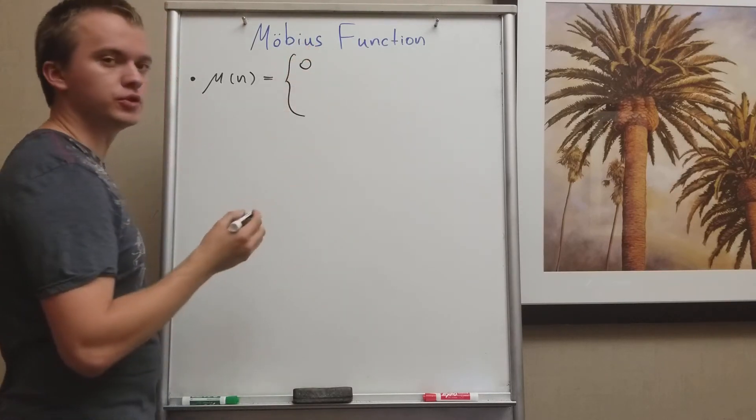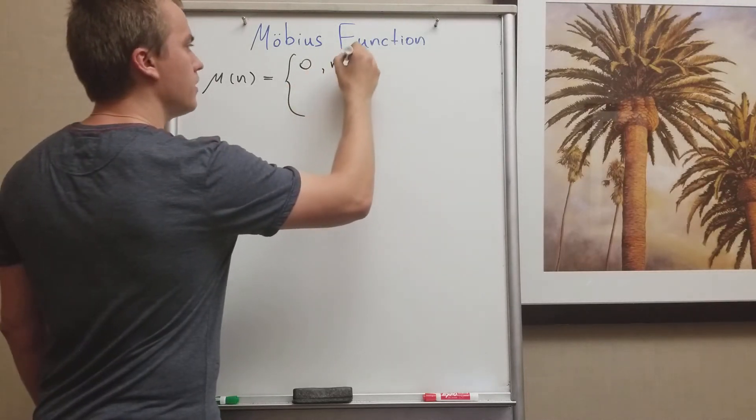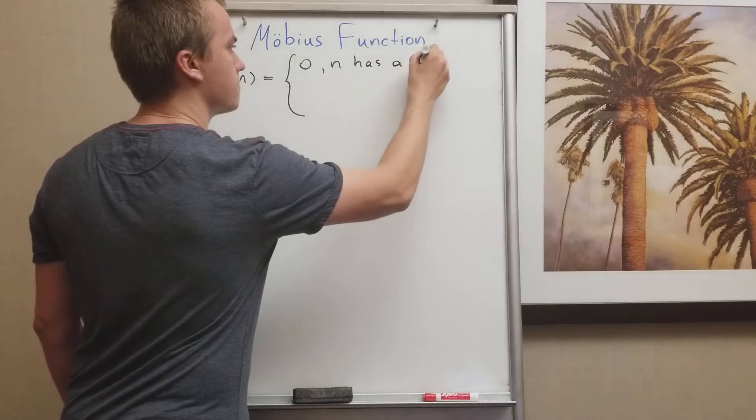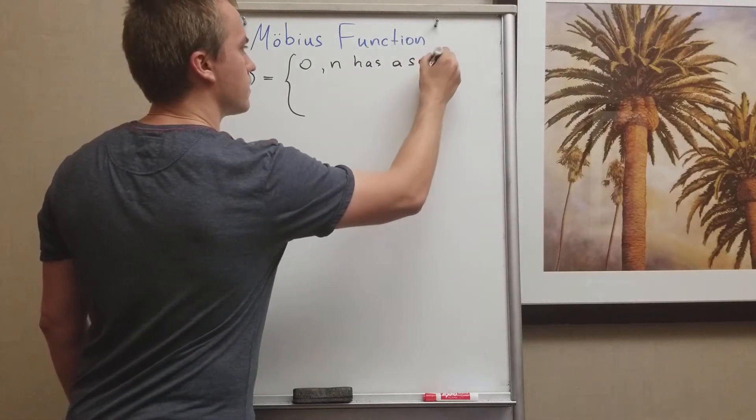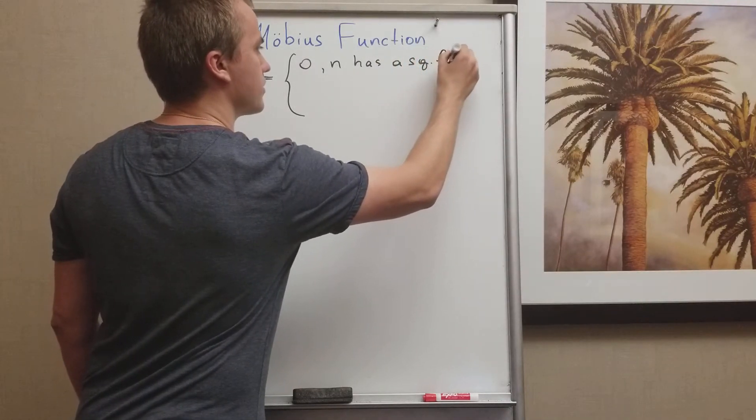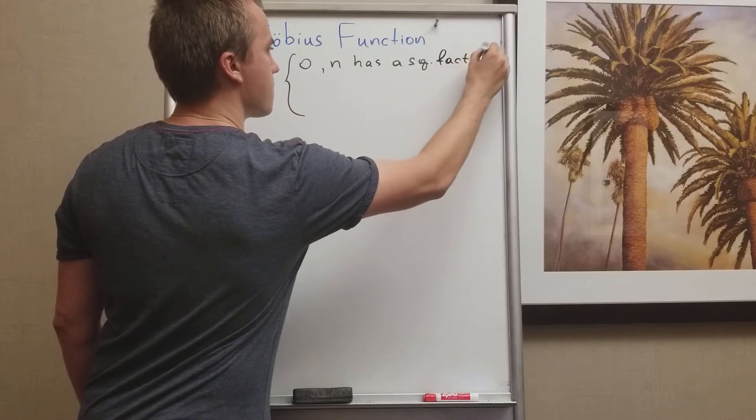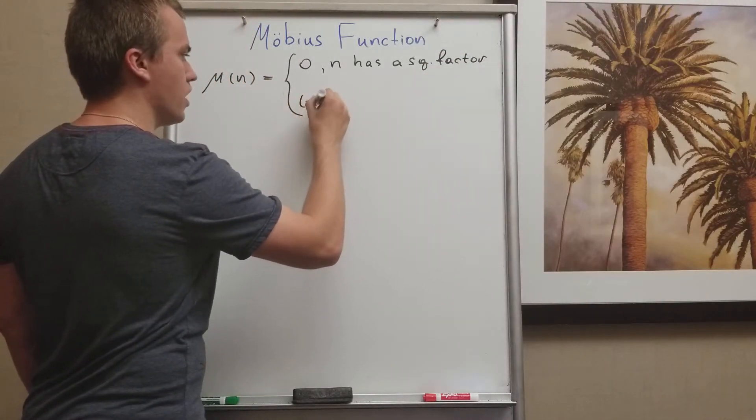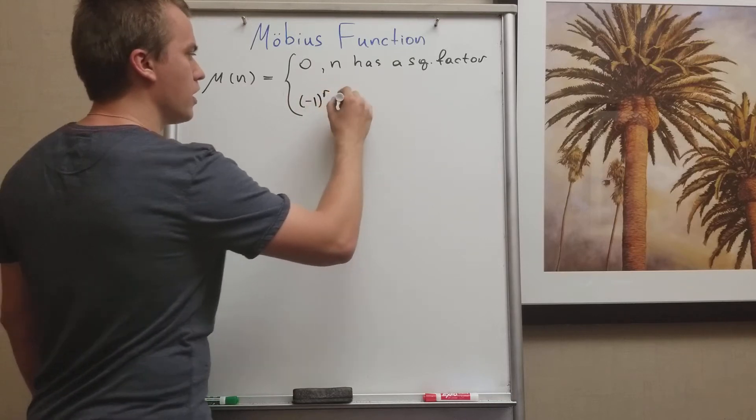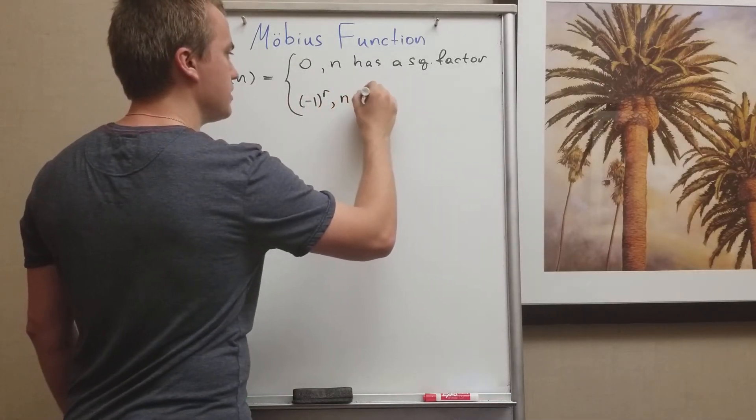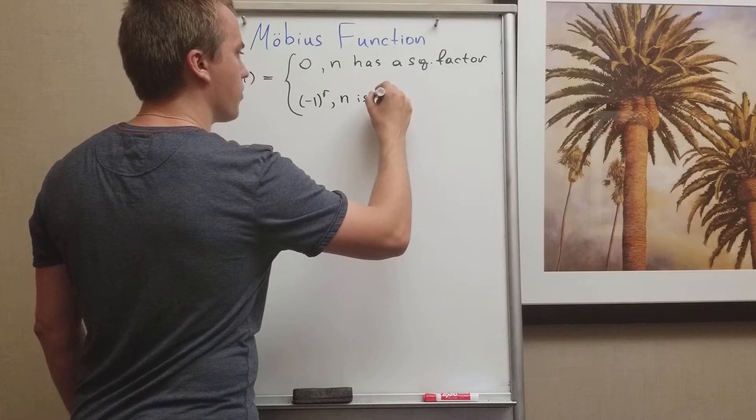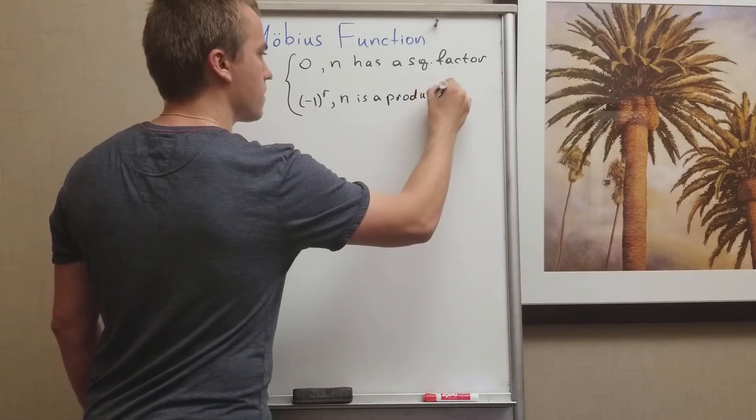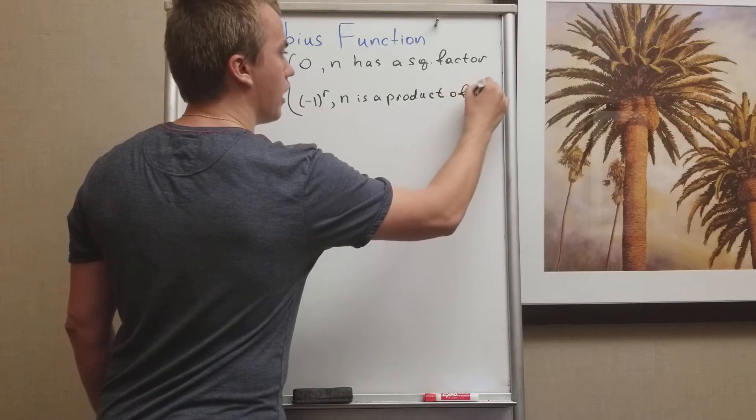We're saying that our Möbius function equals 0 if n has a square factor, and we're saying that our Möbius function equals negative 1 to the power of r if n is a product of r distinct primes. And this is our Möbius function.